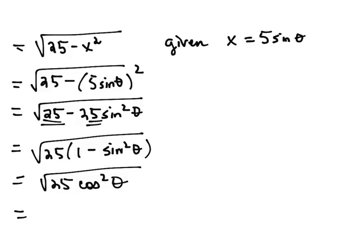So now we have the square root of two perfect squares. The square root of 25 is 5, and the square root of cosine squared of theta is cosine theta. So we've simplified our problem down to be 5 cosine theta.